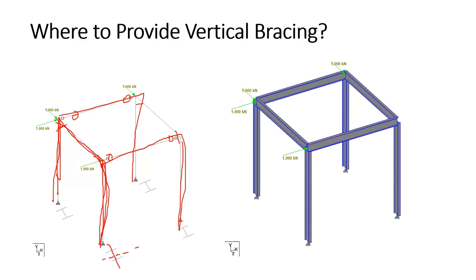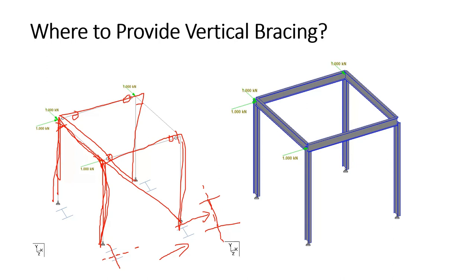So that's your answer — we provide vertical bracing in the direction where you have shear connections between beam and column. Additionally, considering the column orientation, when load is applied in this direction, moment is generated about the minor axis of the I-section, whose moment of inertia is very small. So it is better to provide bracing to take care of minor axis buckling, which is another reason to provide bracing in this direction.